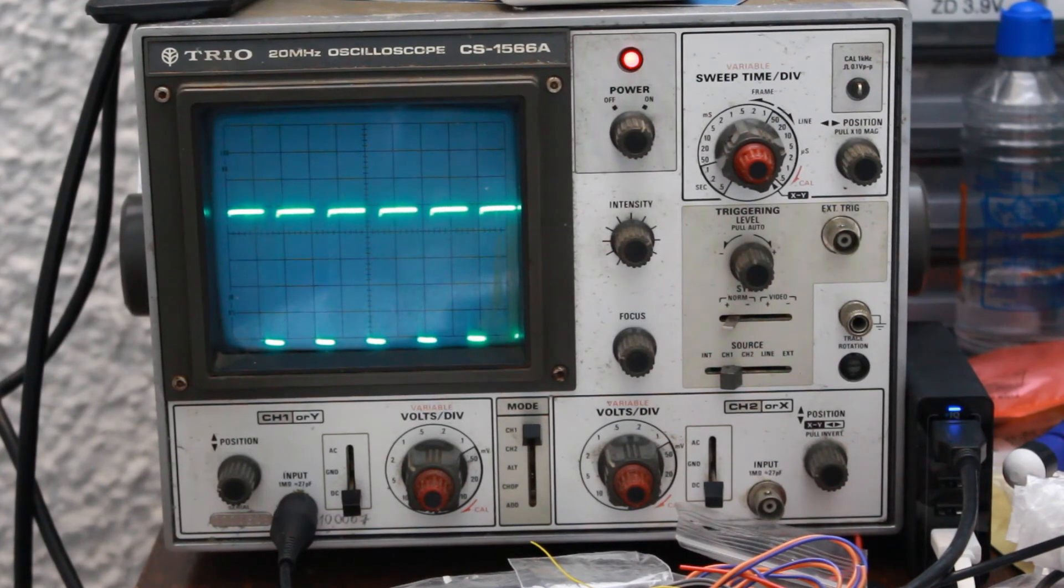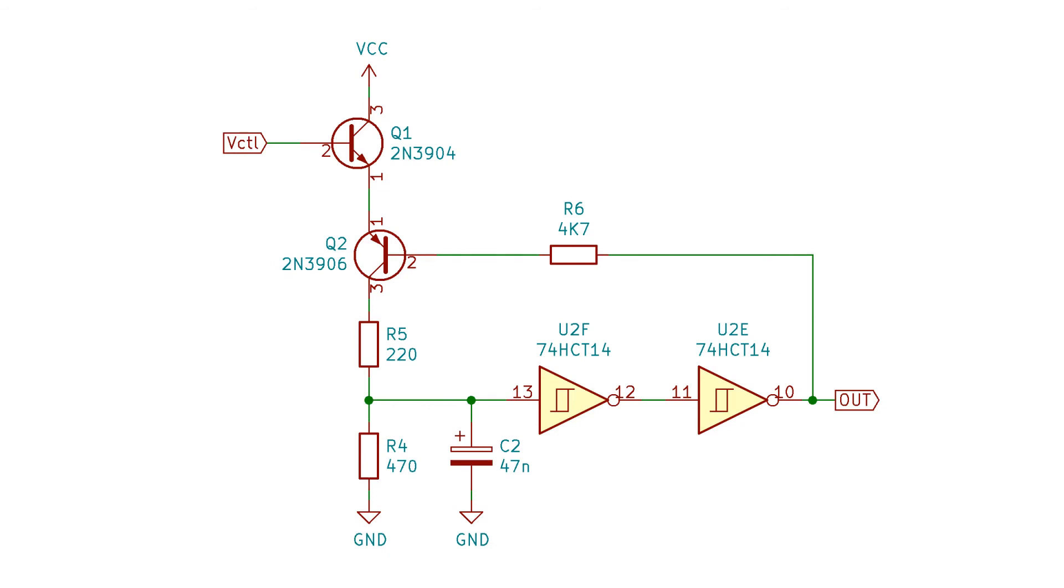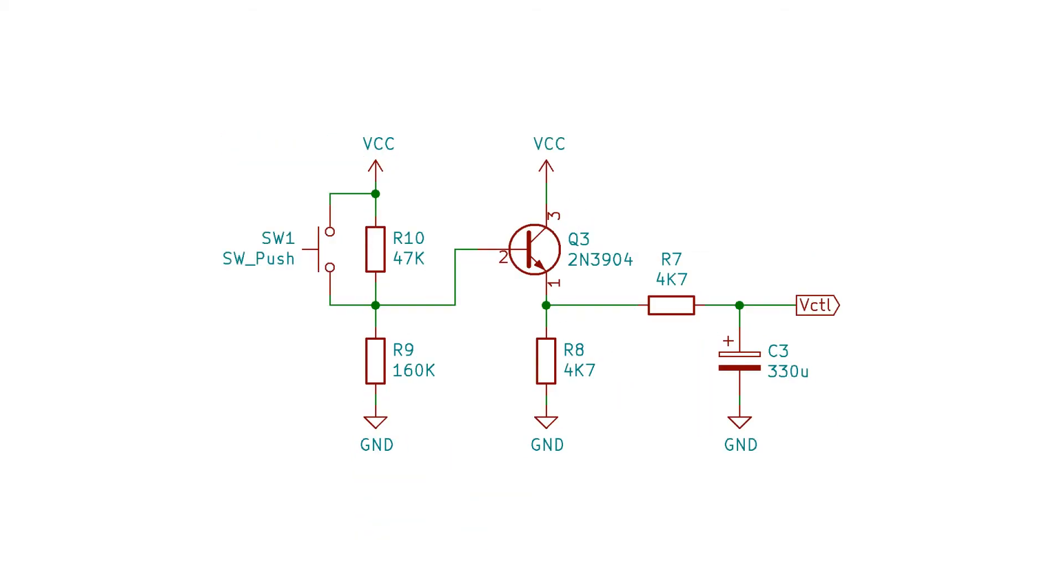As a teaser for the next video, let's take a look at how this will help us to go on to implement a phase-lock loop. I'm going to remove the potentiometer, and instead drive VCTL with this new circuit.